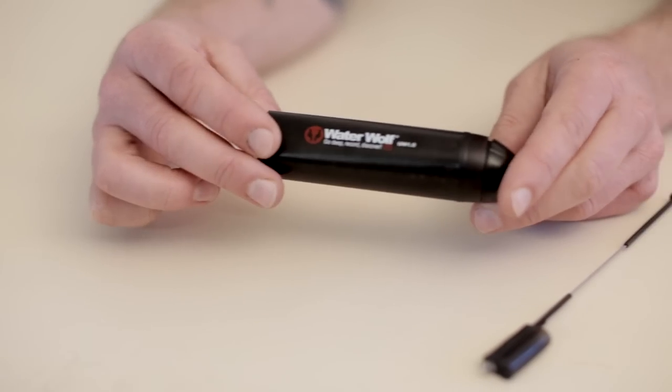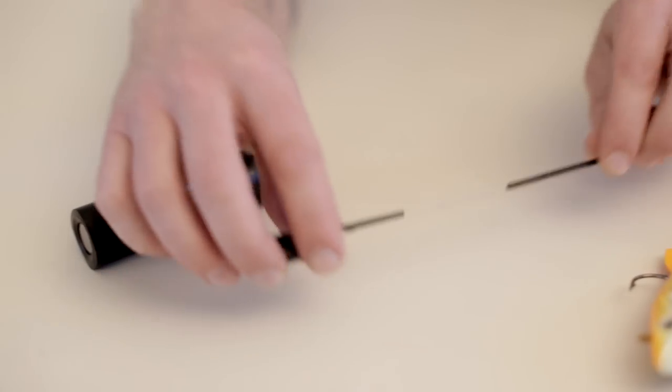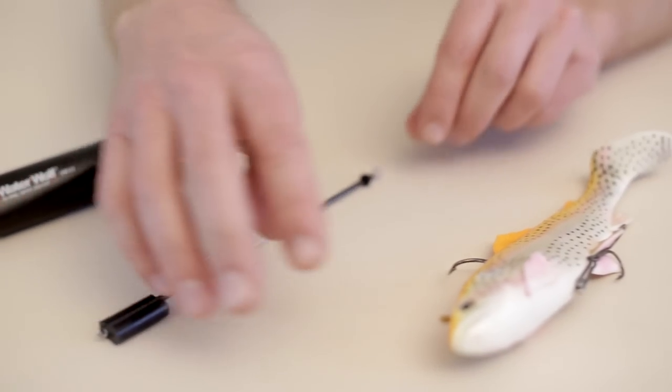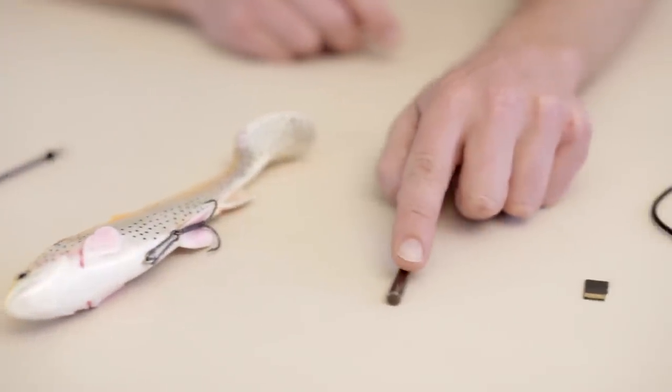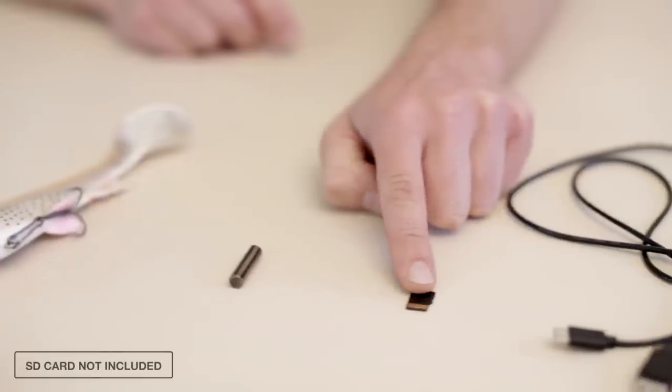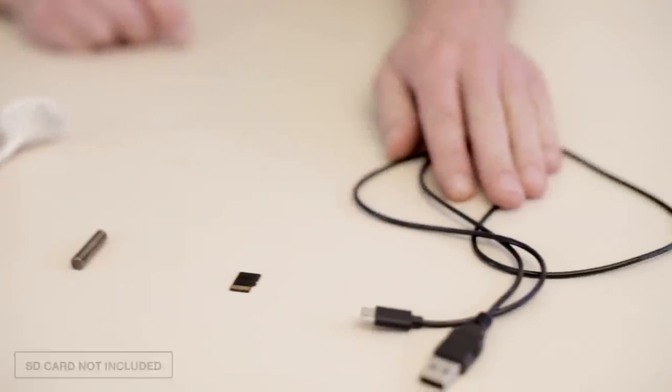Recording your first waterwolf video is easy. All you need is your camera, the line tube, your chosen lure, a brass weight, an SD card, and the USB cable.